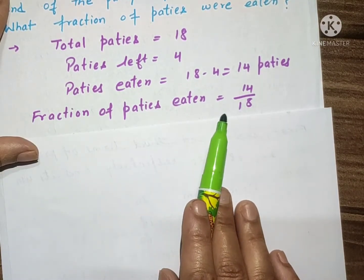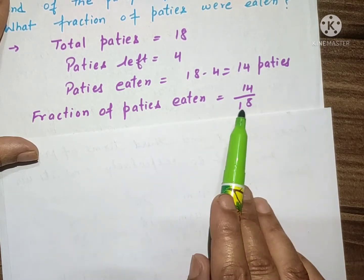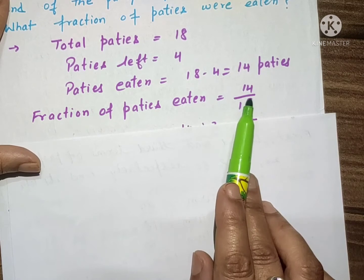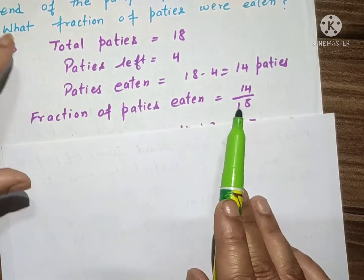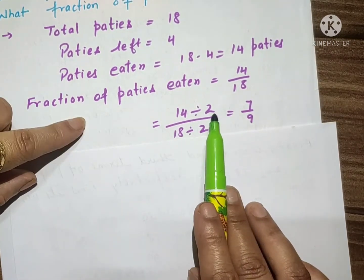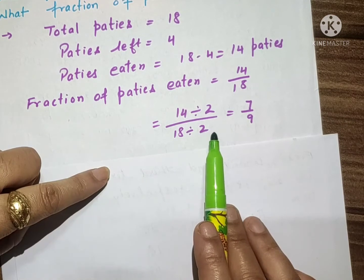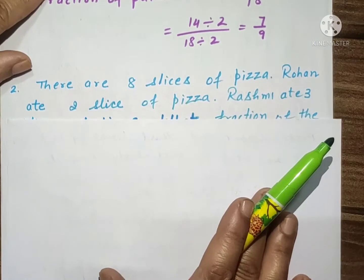Fraction of patties kaise nikalenge? Jitni patties khai gai divided by total patties: 14 patties jo hai woh eat ki gai party mein aur jo total patties thi woh 18, means 14 upon 18. 14 divide by 2 and 18 also divide by 2 equals 7 by 9. So I hope it is clear.